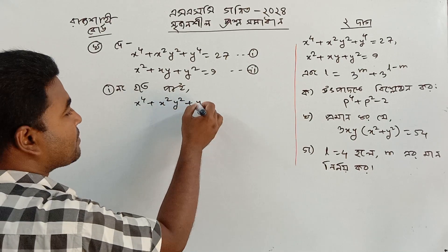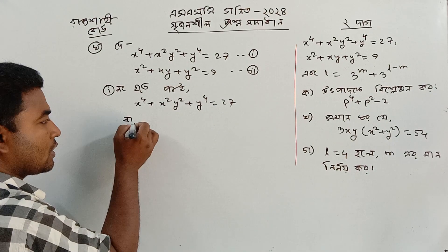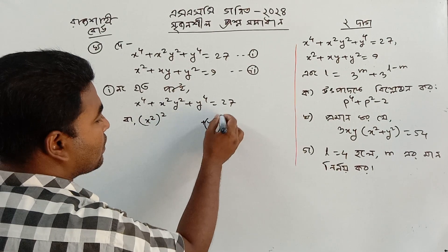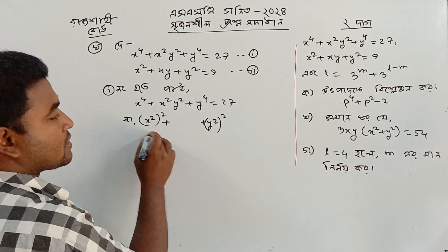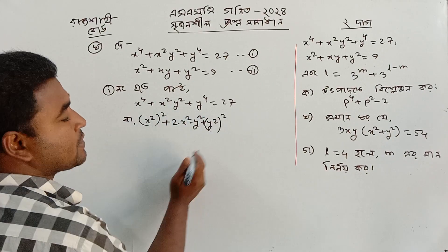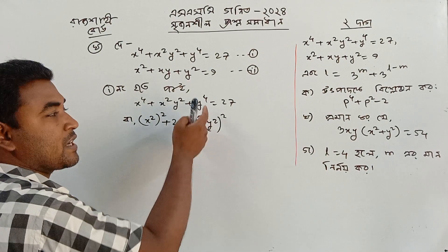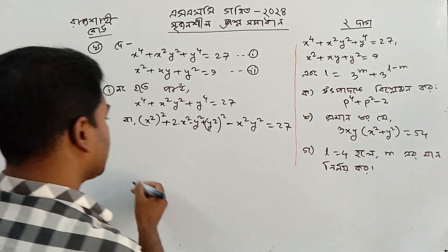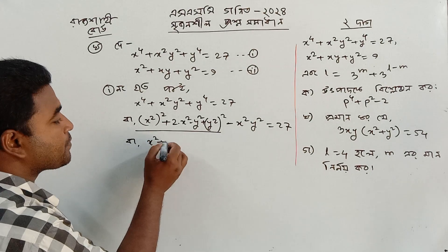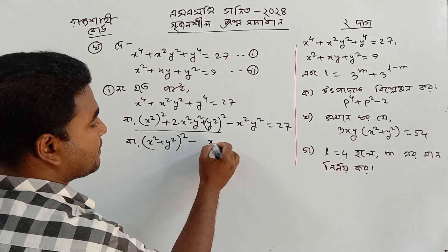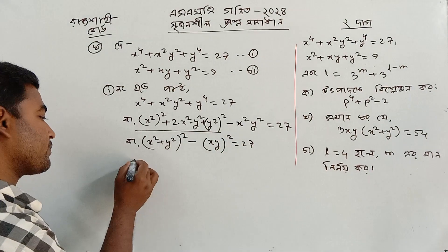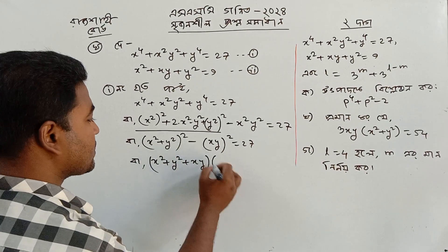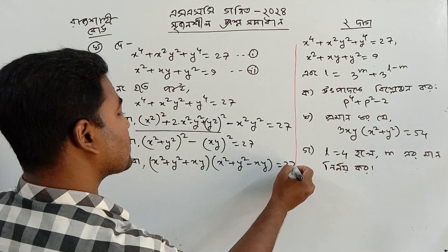x⁴ plus x²y² plus y⁴ equal to 27. We have the number here — which is a double of x²? Here is the number of y² and y². So we have y² plus y², and we can write x² plus x² plus y². Using a triangle identity, y² equals 2, so (a plus b) whole square minus the xy whole square equals 27.